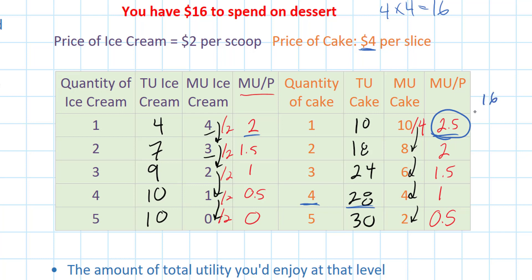I had sixteen dollars, I spent four on cake, and now I have twelve dollars left to spend. What should I buy next? Should I buy a second slice of cake which gives me two utils per dollar, or a first scoop of ice cream which also provides me with two utils per dollar? In fact, I can afford both, so I'm going to buy both.